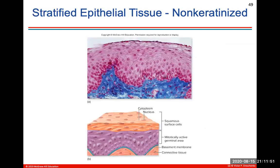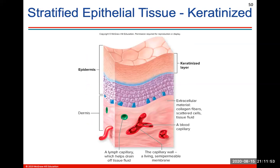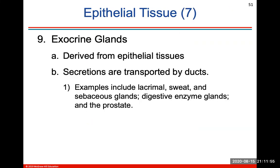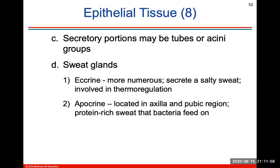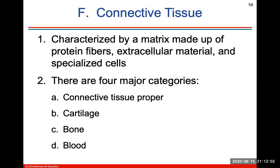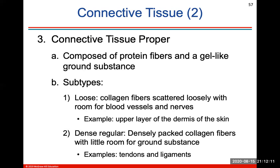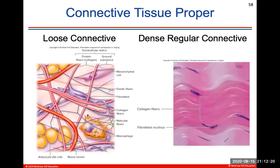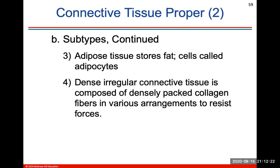Feel free to pause this lecture at any time, and the PowerPoint is also available in your course modules. Connective tissue is the final type of tissue — it's the most broad and diverse because it includes bone, blood, and cartilage. Connective tissue proper can be loose or dense: loose is the body's packing material, and dense includes tendons and ligaments. I'll let you guys look through these slides as a good review.